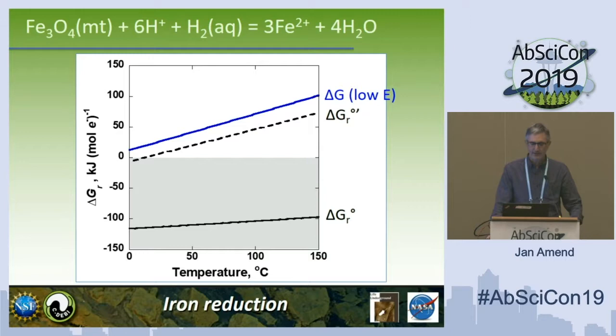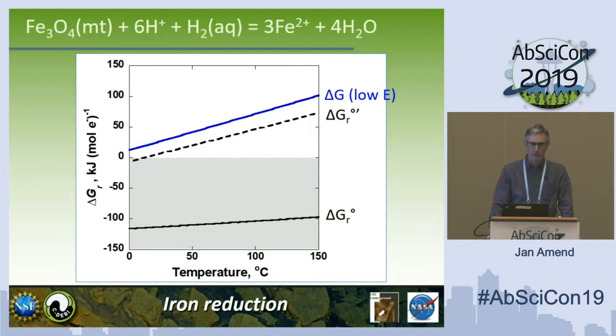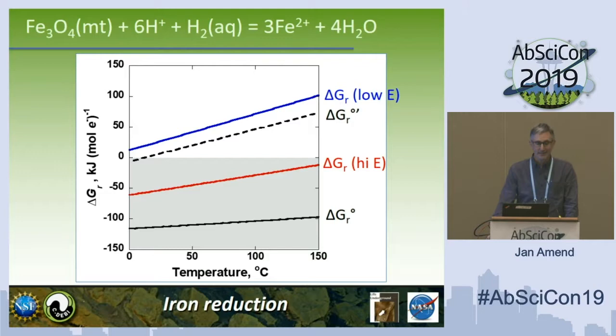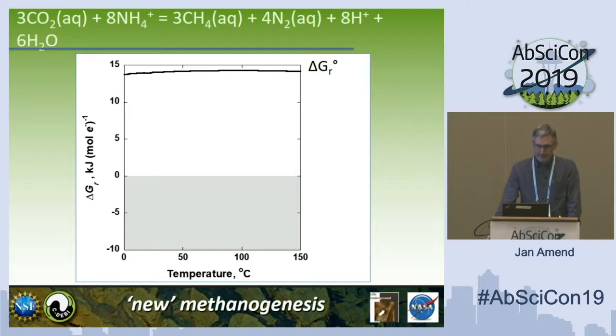If you consider the low energy example — low concentration of protons, meaning a basic high-pH system, low hydrogen concentrations, and high ferrous iron — the energetics would be above zero, endergonic, not a good potential catabolism. However, in an acidic environment with high proton activity, high hydrogen, and low ferrous iron, there would be somewhere in the order of minus 50 to minus 20 kilojoules per mole of electron transferred over this temperature range. So certainly at low temperatures in an acidic environment with high hydrogen, this is a potential catabolism.